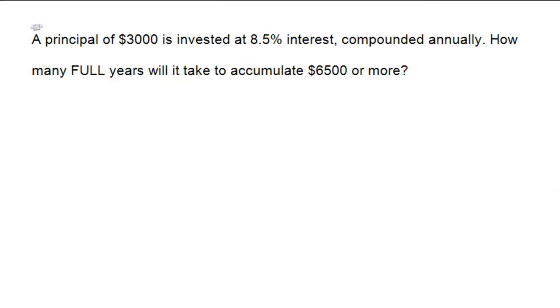Let's do a problem involving interest and exponential growth here. So imagine we have a principal amount of $3,000 being invested at 8.5% interest, and we're going to suppose that it's being compounded annually. How many full years will it take to accumulate $6,500 or more?